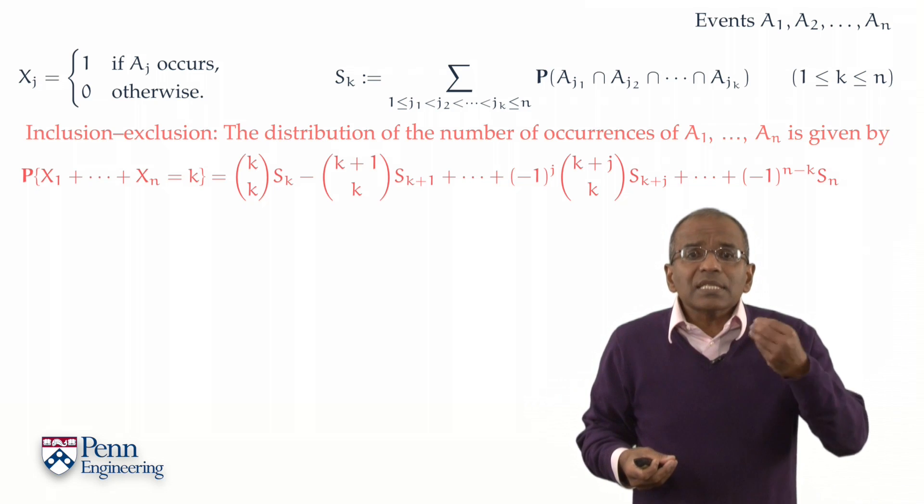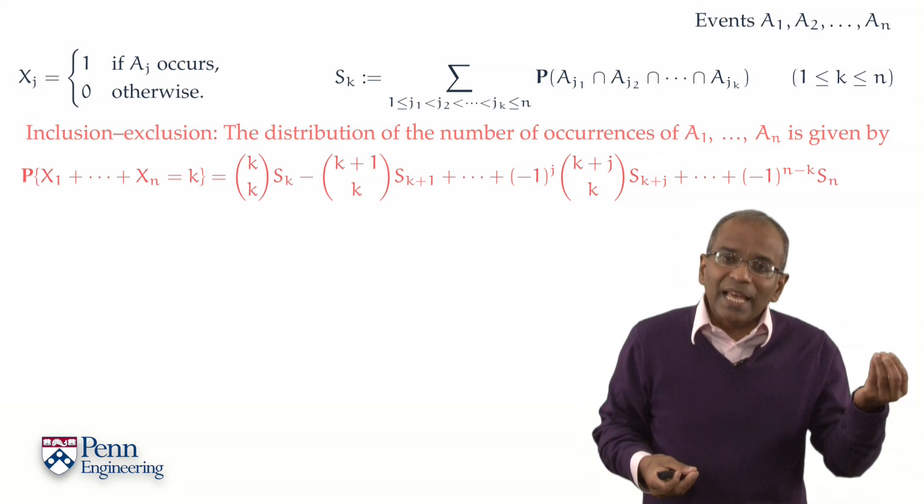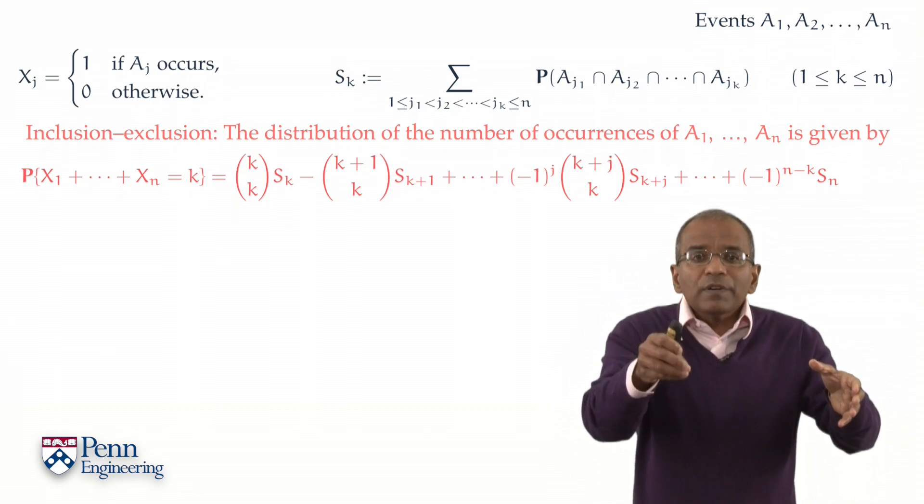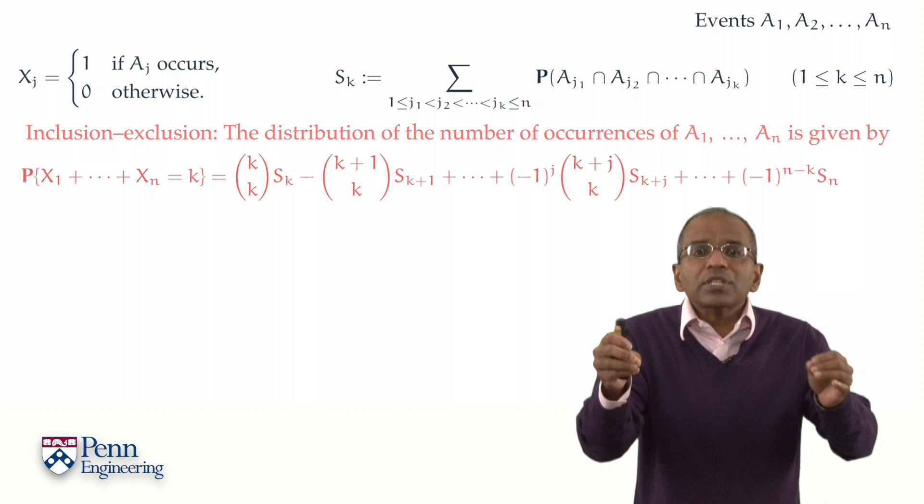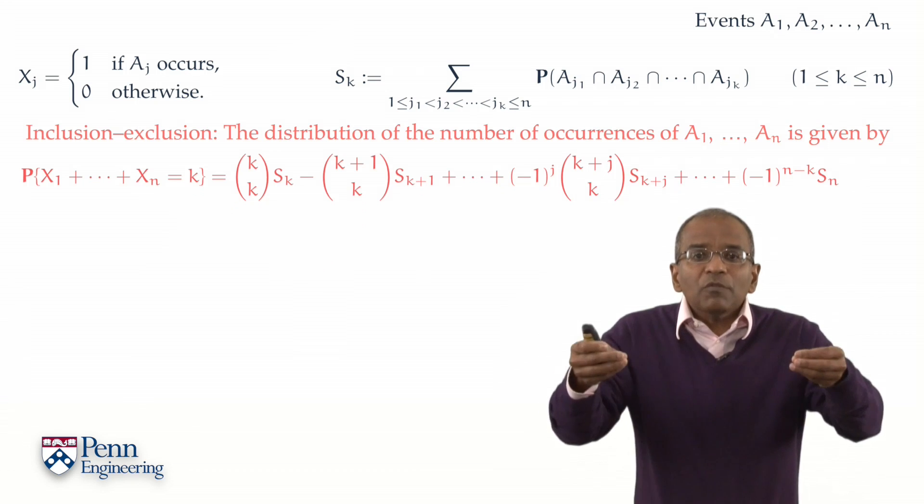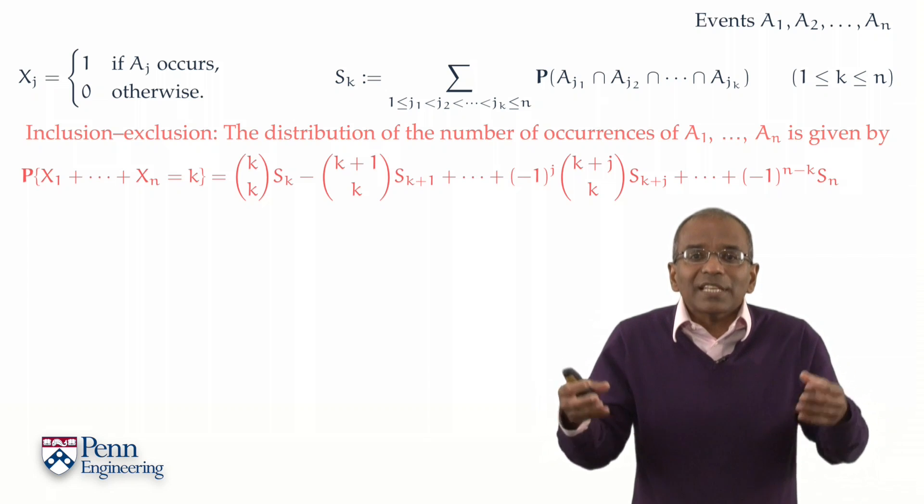If you look at the sum of the indicators X1 plus X2 plus X3 through Xn, this sum will just flag whichever events occurred. You'll get a 1 precisely when that event occurred. And therefore, the sum will give you exactly the number of occurrences of the events A1 through An.